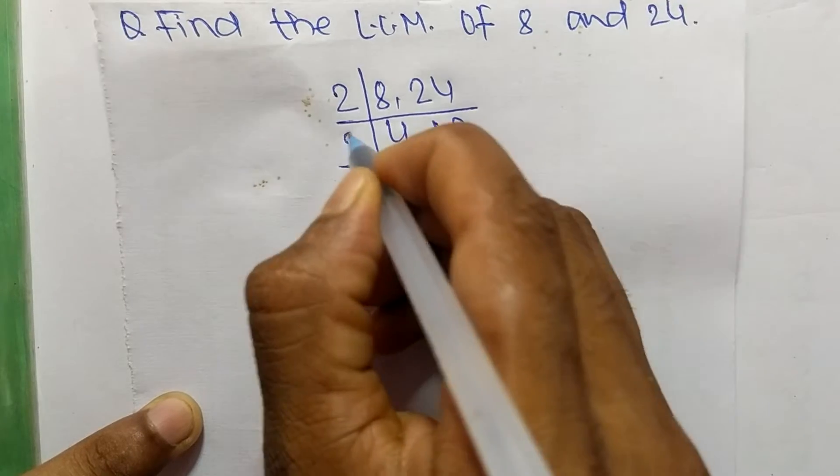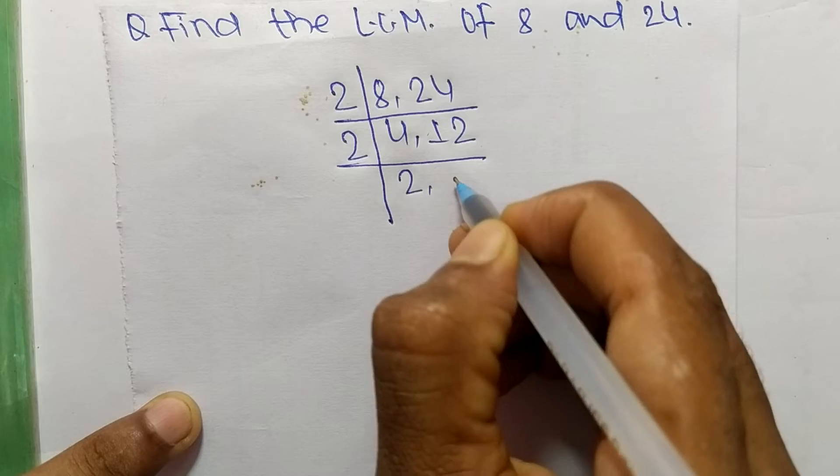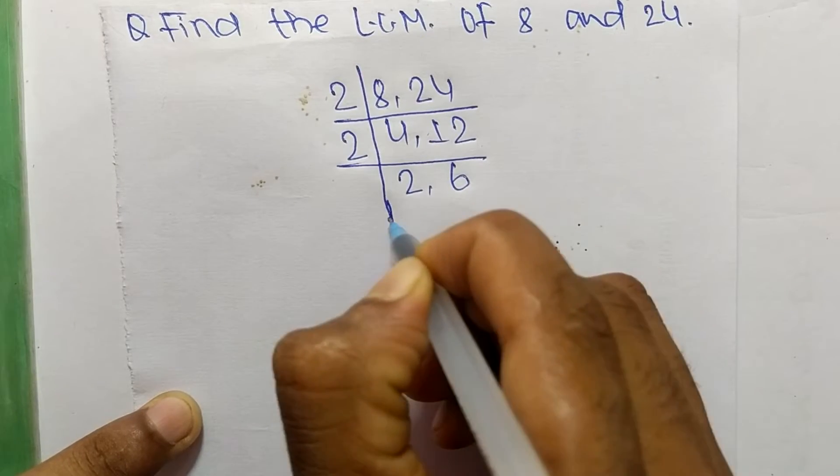So again take 2. 2 times 2 means 4, and 2 times 6 means 12.